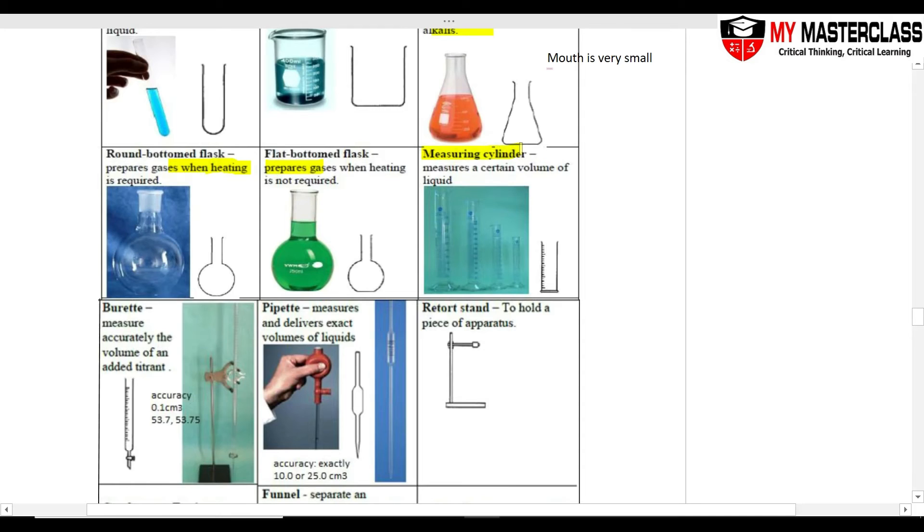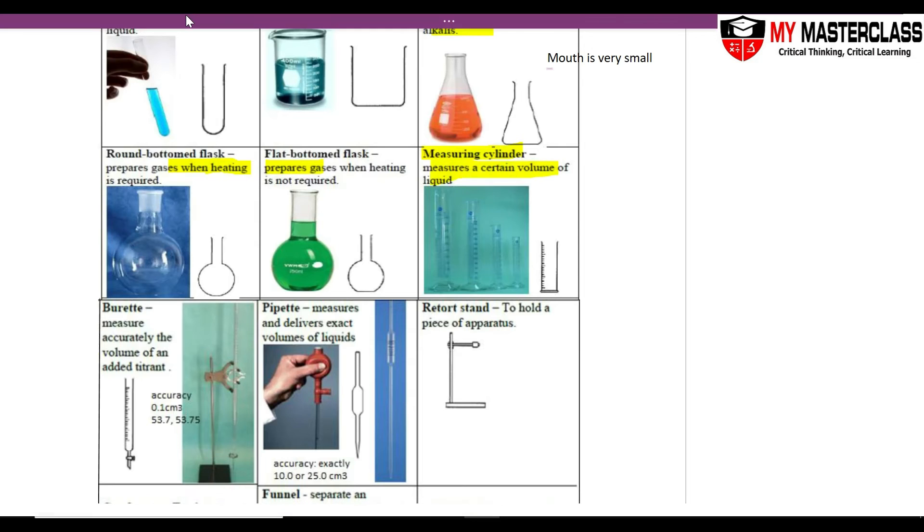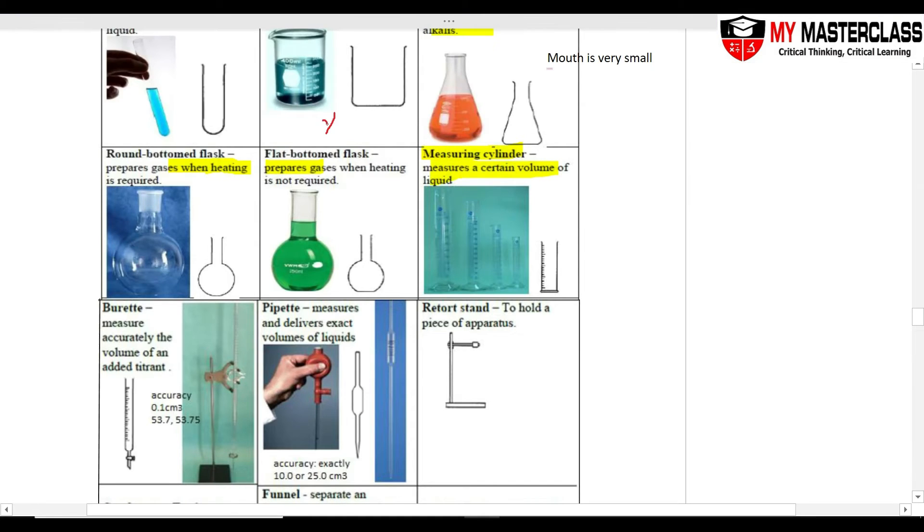Measuring cylinder, this one is to measure certain volumes of the liquid. Moving forward, I never use the beaker to measure volume of liquid, it's not accurate. Use your measuring cylinder or the buret or the pipette.